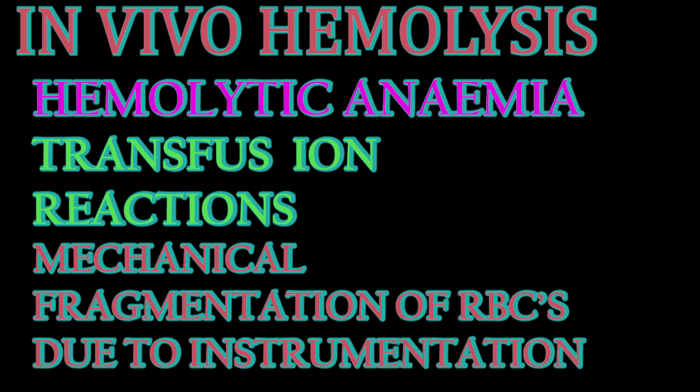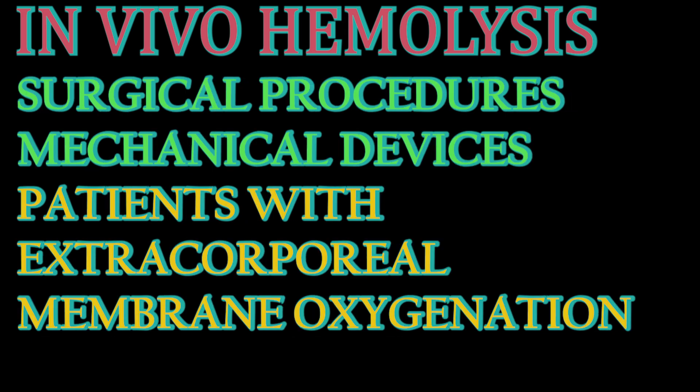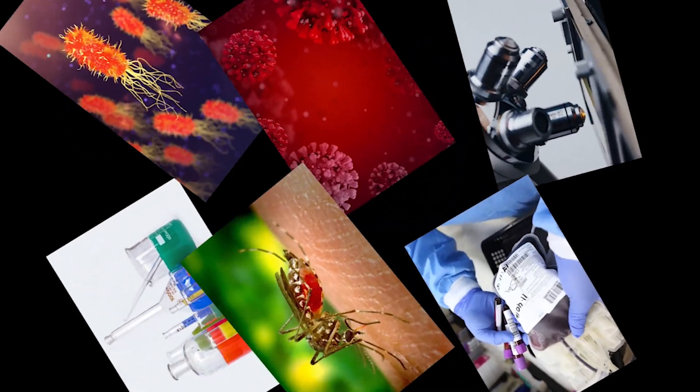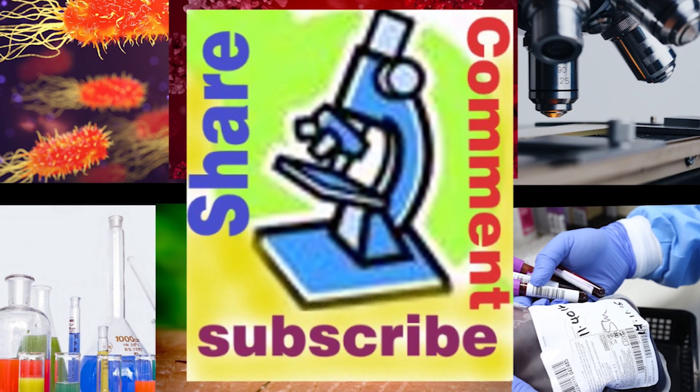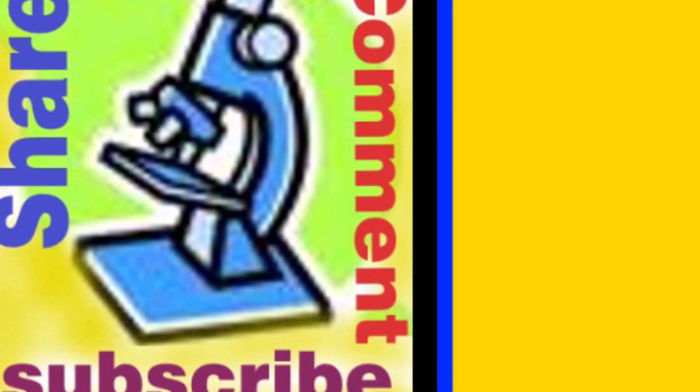There are some medical conditions that cause hemolysis of a sample in vivo. For these samples, tests are performed while indicating the level of hemolysis. Conditions that cause hemolysis in vivo include: hemolytic anemia, transfusion reactions, mechanical fragmentation of RBCs due to instrumentation, surgical procedures, mechanical devices, patients requiring extracorporeal membrane oxygenation (ECMO) support, and ventricular assist devices. Thanks for watching this video — please like, share, subscribe, and write your comments.